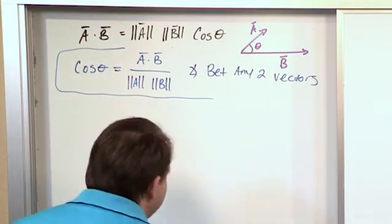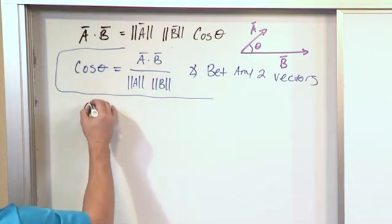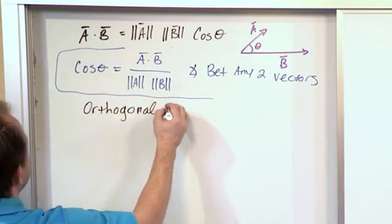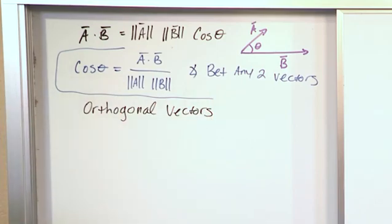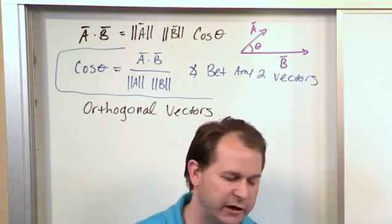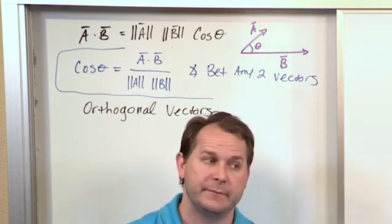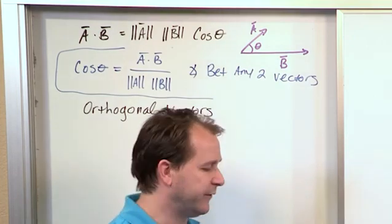Now the second thing I want to talk about is the concept of orthogonal vectors. Believe me, it has a very complicated sounding name, just like lots of things in higher math, but really they're very easy to understand. Orthogonal basically just means 90 degrees between the vectors. So the vectors are perpendicular to one another. That's what 90 degree angle is, right? It's perpendicular.